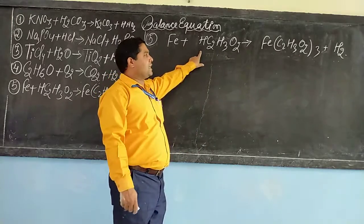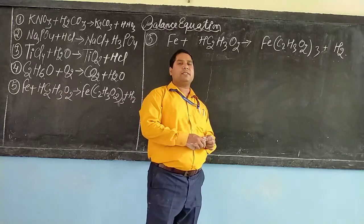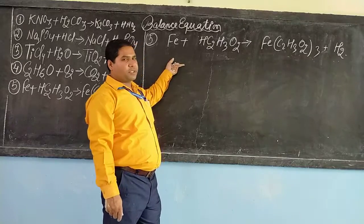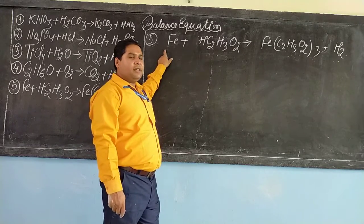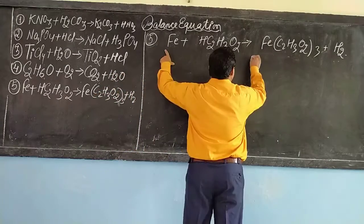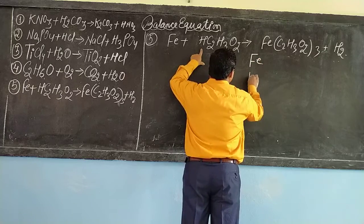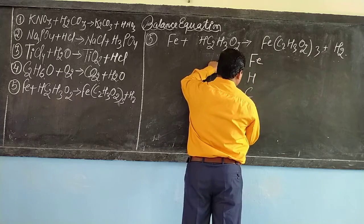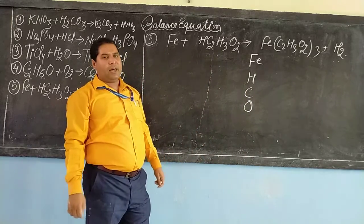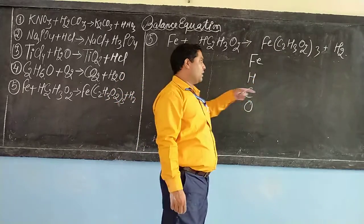Iron reacts with acid, and then the formation of iron 3 acetate plus hydrogen. So today students, before we proceed to balance the equation, first we will see the elements present in the chemical equation. So the elements are iron, hydrogen, carbon, and oxygen. Now we will calculate the number of atoms of each element in the reactant side and the product side.